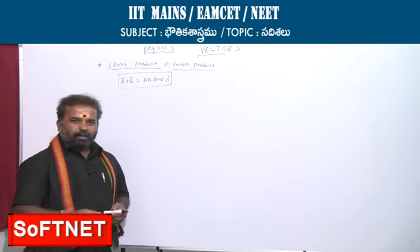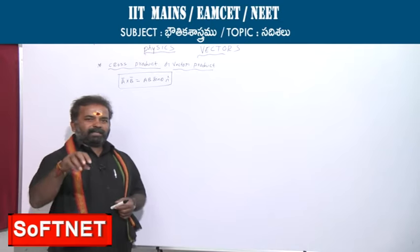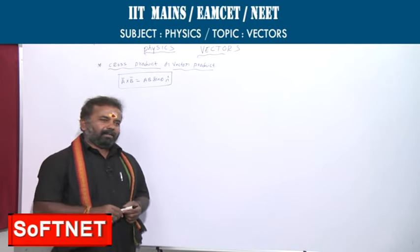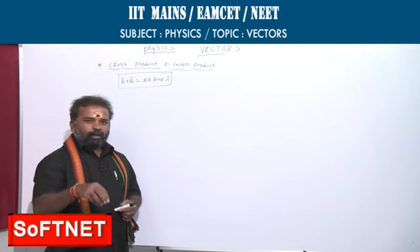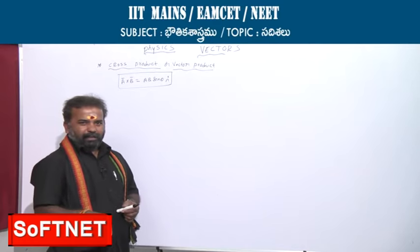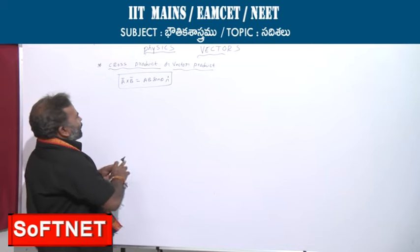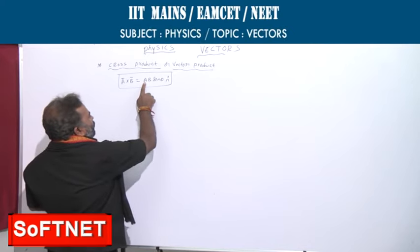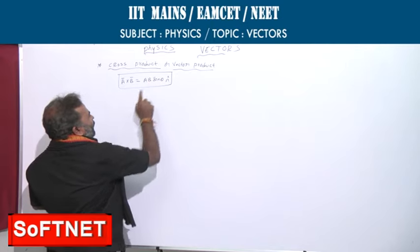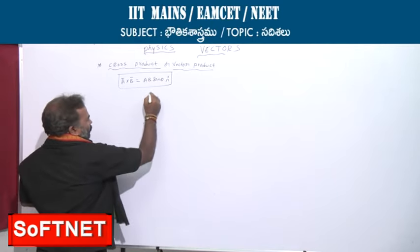The resultant of cross product is also a vector, whereas in dot product the resultant is a scalar. So cross product of two vectors is a vector whose magnitude is equal to the product of the magnitudes of two vectors with the angle of sine between them.